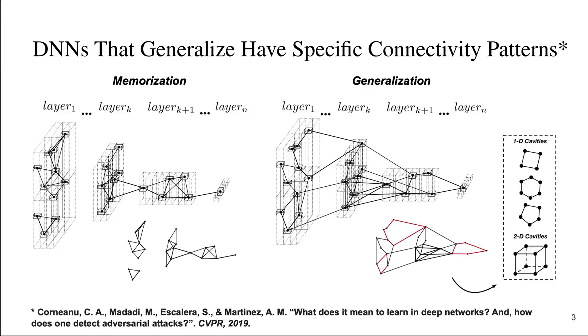In contrast, when a network generalizes, its functional activation pattern involves a large number of parameters distributed across the whole network. That is, every sample activates a similarly large number of nodes distributed across the network as shown on the right.